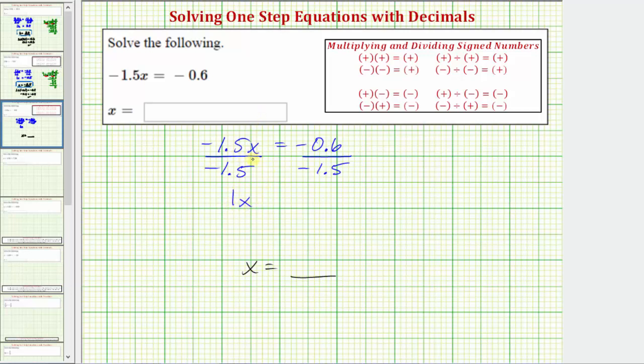Another way to think of this is dividing by negative 1.5 undoes the multiplication involving negative 1.5, and therefore the left side simplifies perfectly to just x.